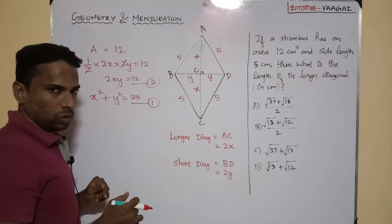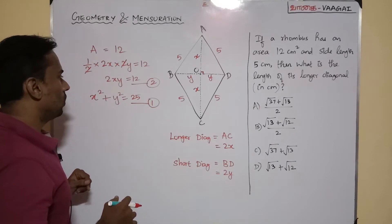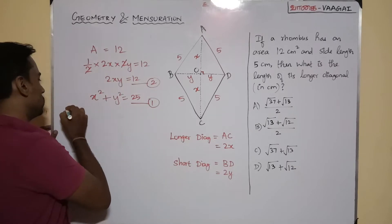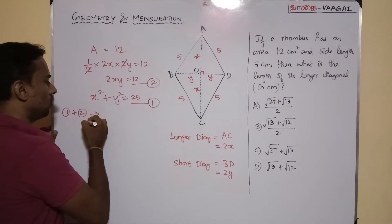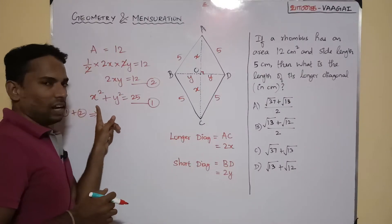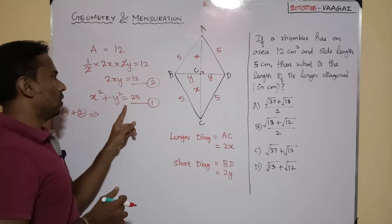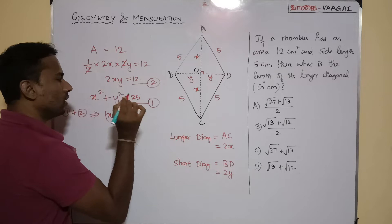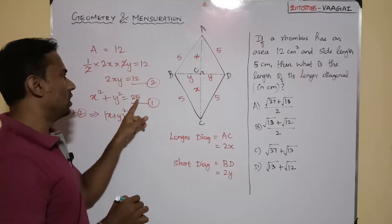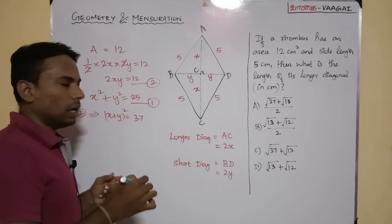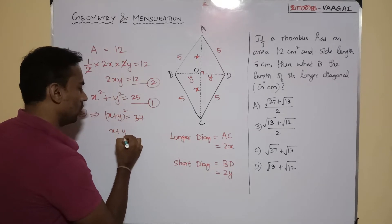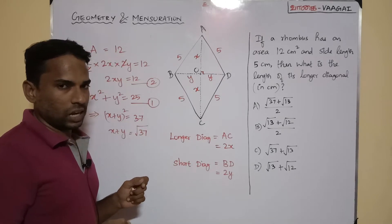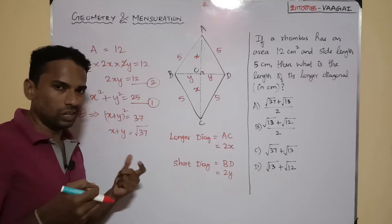First, I am going to add the two equations. Equation 1 plus equation 2 gives: x² + y² + 2xy = 25 + 12, which is (x + y)² = 37. Since sides must be positive, x + y = √37. Let this be equation 3.